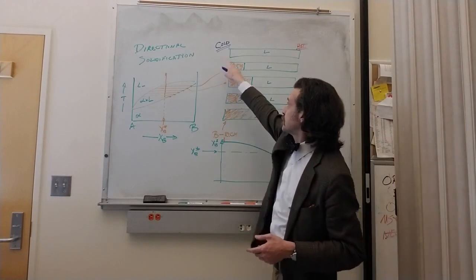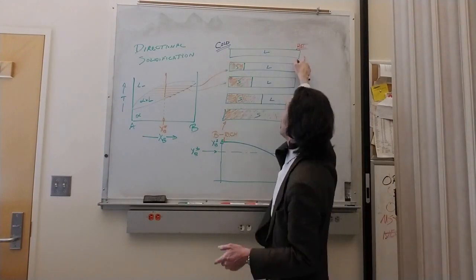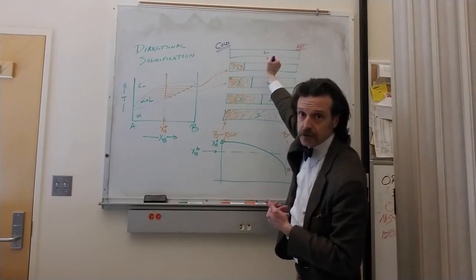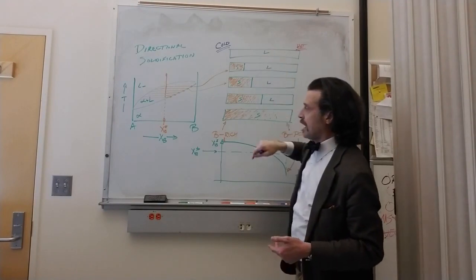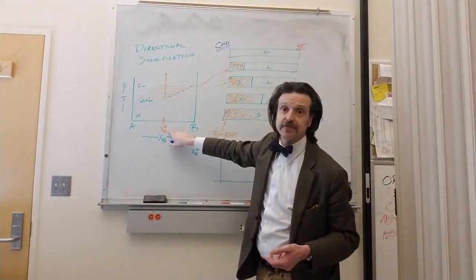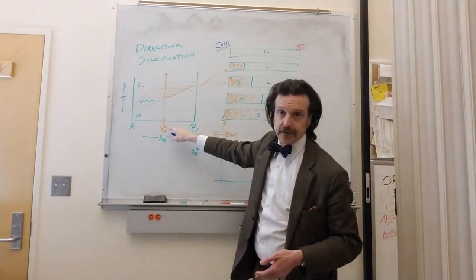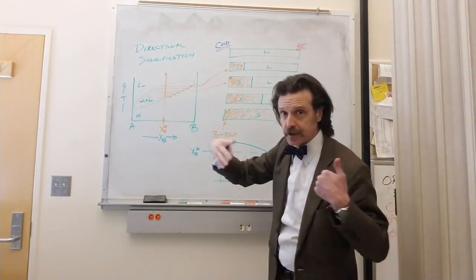In this picture here, I drew a cold side and a hot side, and this represents our crucible. So it starts out as all liquid, and I select a composition XB star as our uniform composition across the liquid.